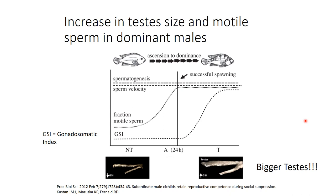With all that LH and FSH acting on the gonads, within 24 hours the ascending males have bigger testes. These cichlids have long testes — they're fish — and you can see bigger testes within 24 hours. They also have increased motile sperm. Spermatogenesis and sperm velocity don't change much, but the gonadosomatic index — the size of the testes — gets much, much bigger. This is part of what happens when they ascend to dominance.